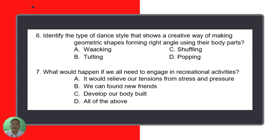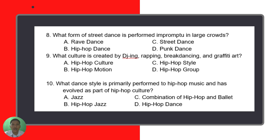Number six: Identify the type of dance style that shows a creative way of making geometric shapes forming right angles using body parts. Number seven: What would happen if we all need to engage in recreational activities? Number eight: What form of street dance is performed impromptu in large crowds? Number nine: What culture is created by DJing, rapping, breakdancing, and graffiti art?